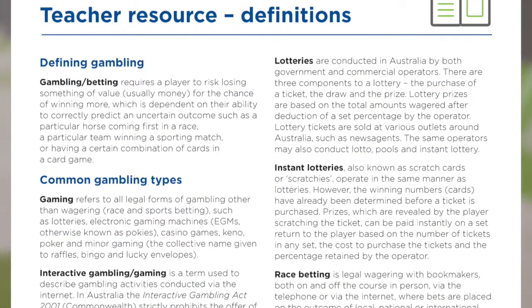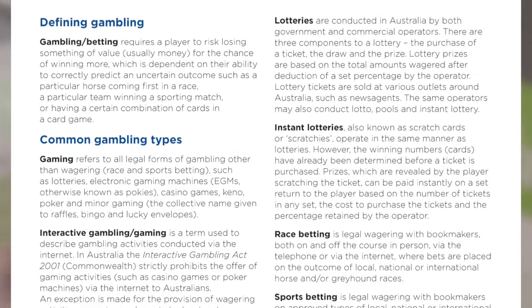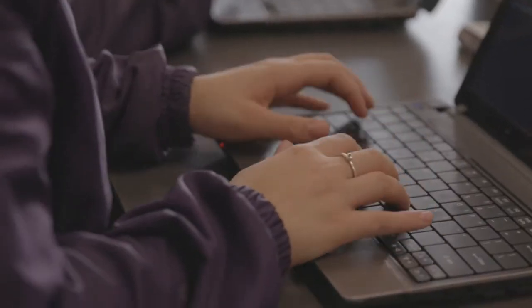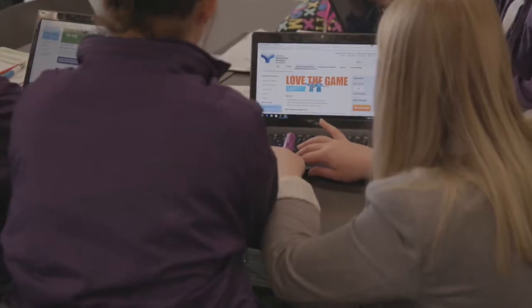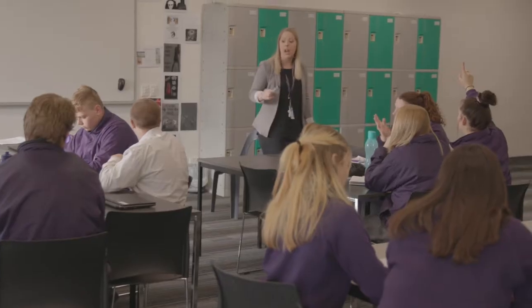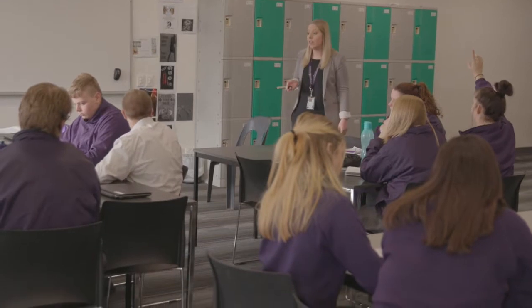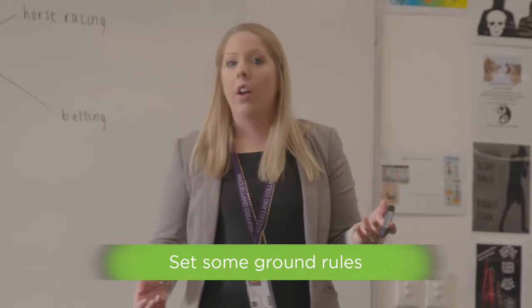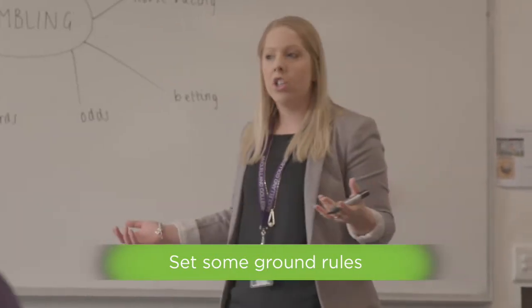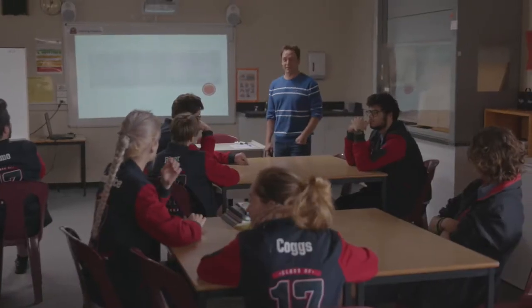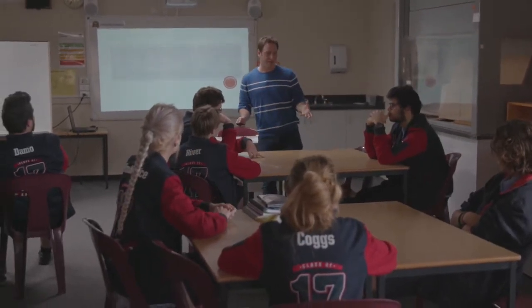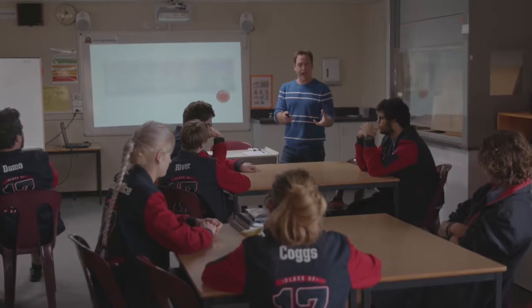The appendix contains a list of definitions you should familiarise yourself with before commencing. This unit includes online research, so before you start, make sure students have internet access. Like any potentially sensitive topic, we'd recommend you and your class set some ground rules together to promote a safe learning space — covering things like how to fairly and respectfully participate in class discussions, what's appropriate to disclose in the classroom, and what students can do if they feel uncomfortable.